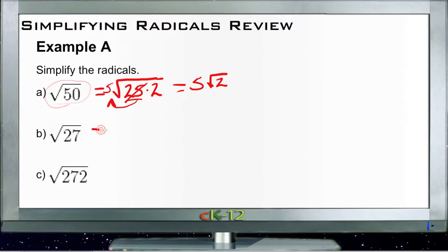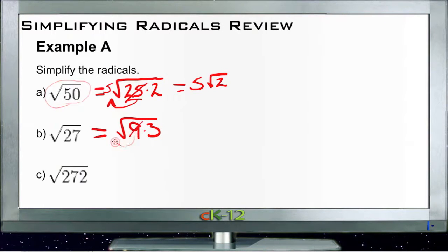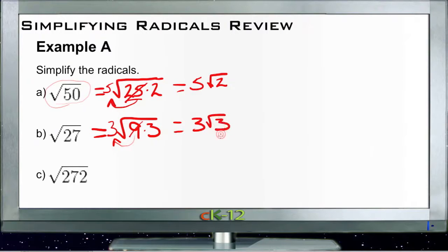Square root of 27 — similarly, 27 is 9 times 3. 9 is a perfect square, so we can take it out from under the root. The square root of 9 is 3, so it goes outside as a 3. And that gives us 3 roots of 3.